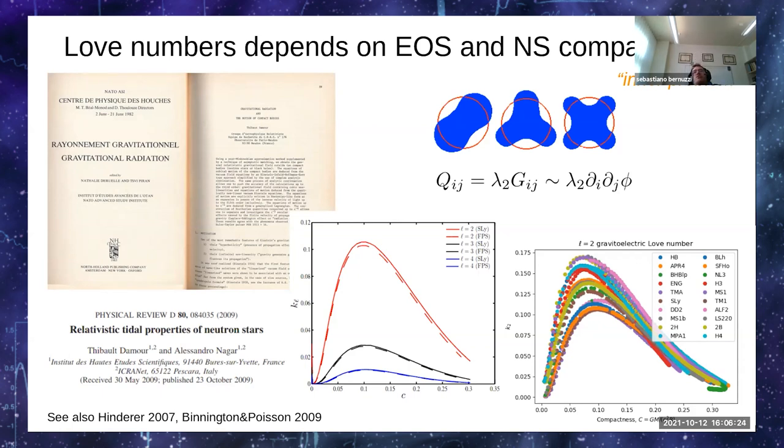Working in linear perturbation theory, following Regge-Wheeler and Thorne and Campolattaro, it's possible to define uniquely sets of multipolar gravitoelectric and gravitomagnetic tidal polarizability coefficients, essentially by matching the asymptotically growing part and the asymptotically decaying part of the perturbed metric. These quantities are very important in gravitational wave astronomy because they depend sensitively on the equation of state and the compactness of the bodies, as shown here in the bottom right plot.